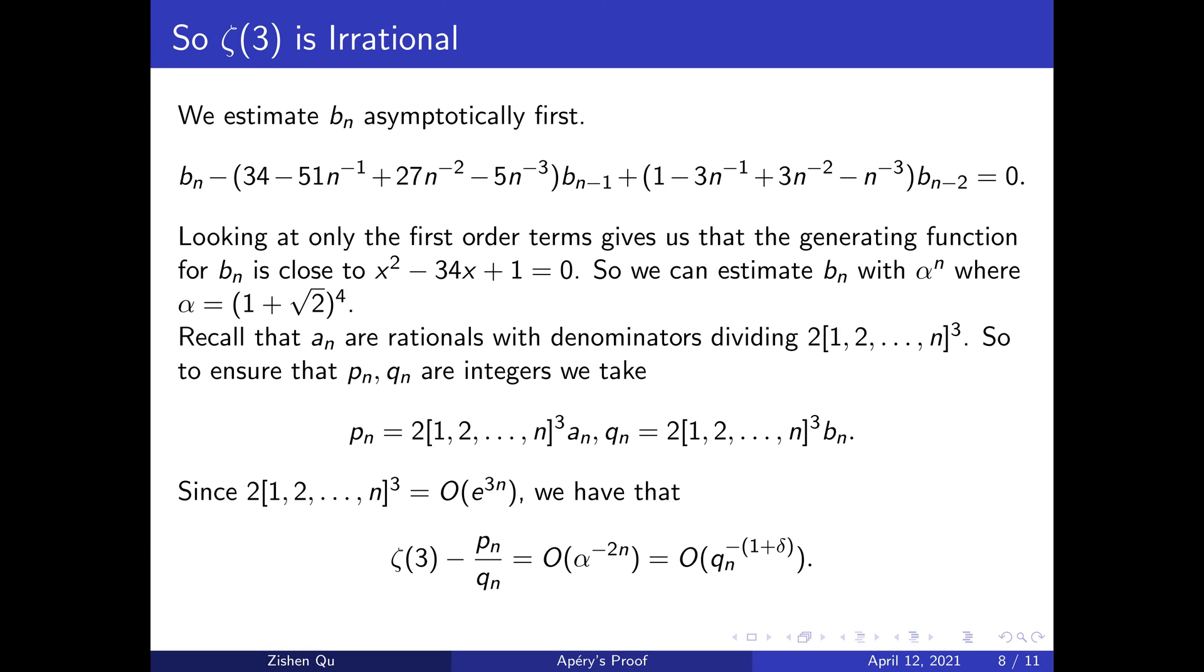We can bound 2 times the cube of the least common multiple of 1 to n by big O of e^{3n}. Combining this with the bound of b_n by α^n, we have that the difference of ζ(3) and p_n/q_n is big O of α^{-2n}. And this is sufficient for our result when we write this in terms of q_n.